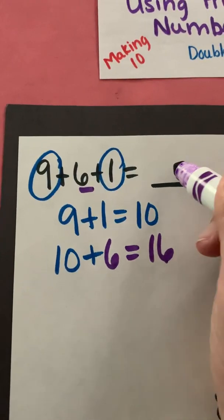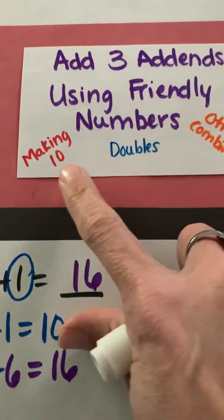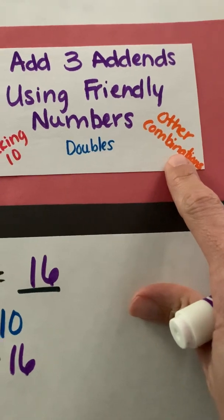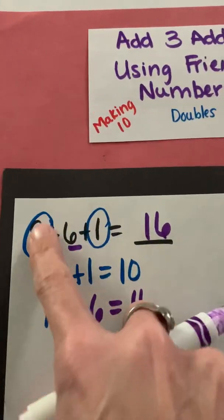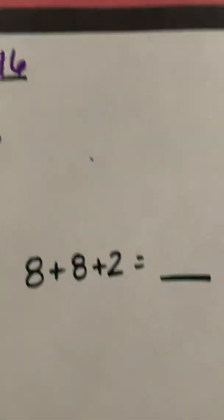So 9 plus 6 plus 1 is 16. Remember I'm looking for: can I make a 10? Do I have doubles? Or any other friendly combinations? I did not have any doubles here, but I did realize that I could make a 10. Alright, let's look at another one.